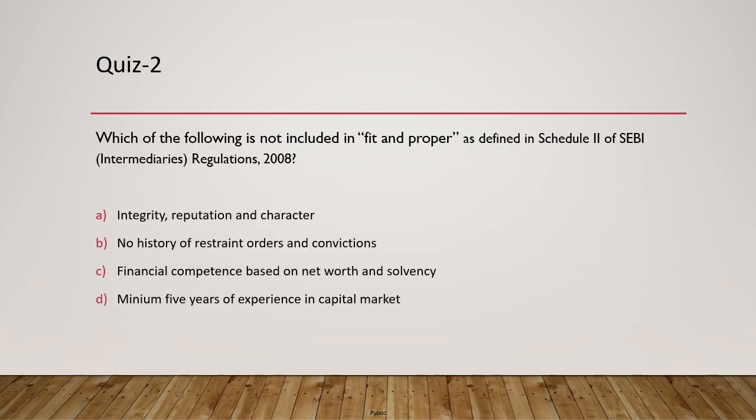Question 2: Which of the following is NOT included in the fit and proper criteria as per SEBI, as defined in Schedule 2 of SEBI Intermediaries Regulations 2008? The options are: integrity, reputation and character; no history of restraint orders and convictions; financial competence based on net worth and solvency; and minimum five years of experience in capital markets. The last option — minimum five years of experience — is not part of fit and proper criteria. So the answer is D.